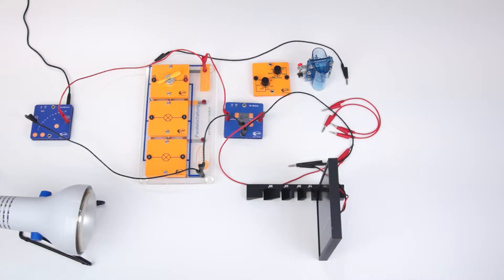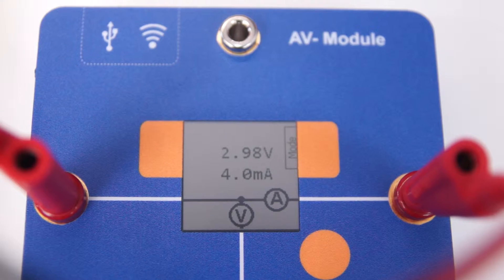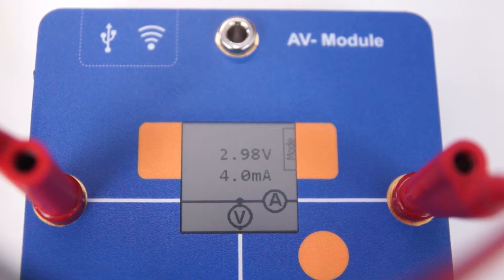To carry out the experiment we now turn on the power module and the AV module. Optionally the AV module must be switched in the current and voltage measurement mode. Thus at the building there is an ideal voltage of about 3 volts.